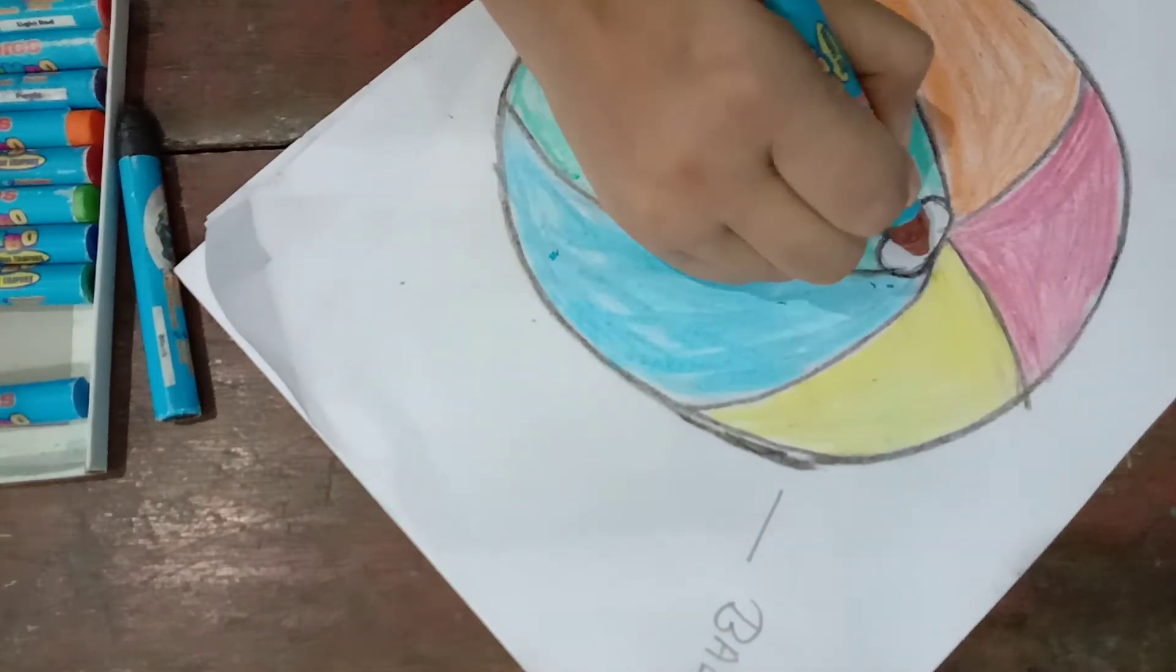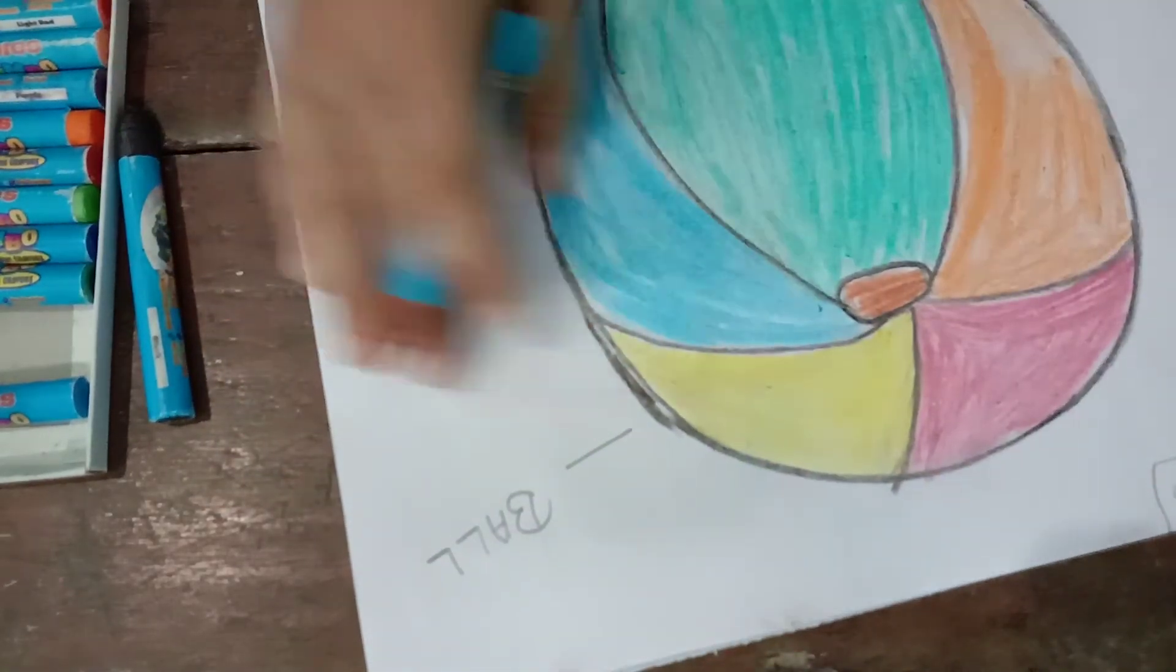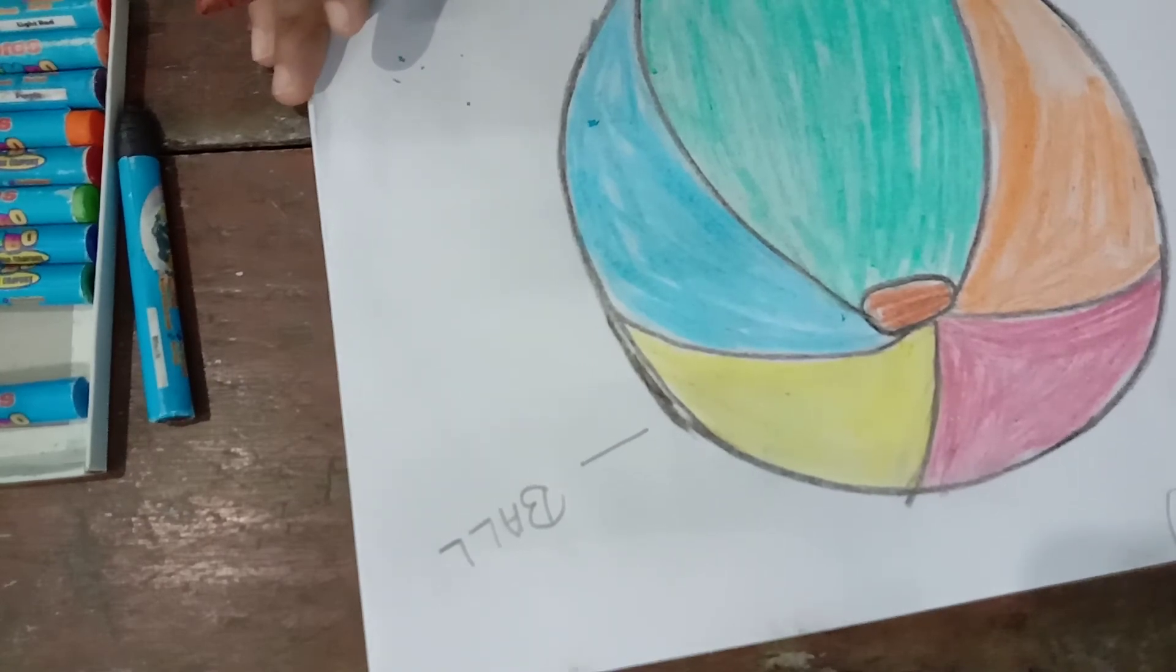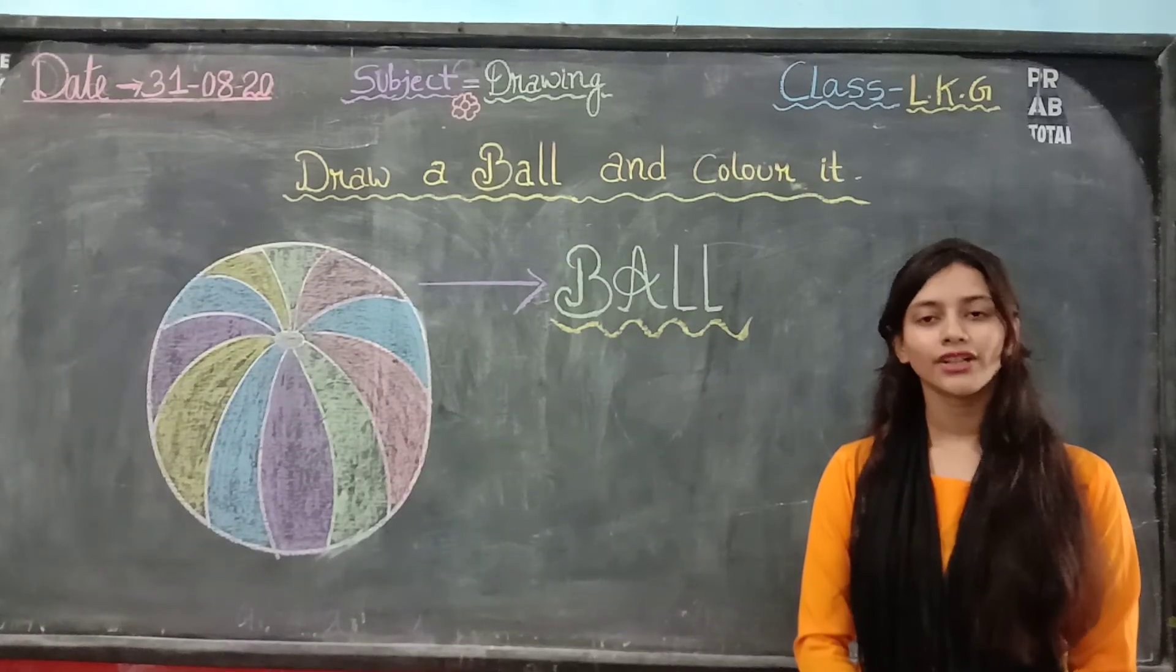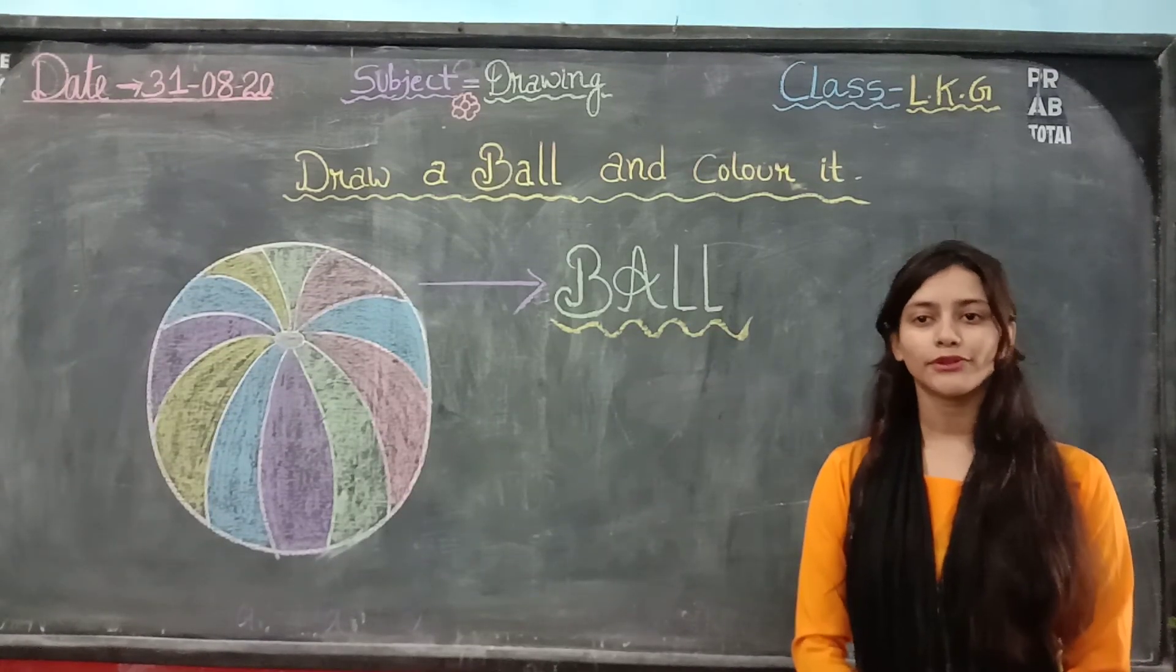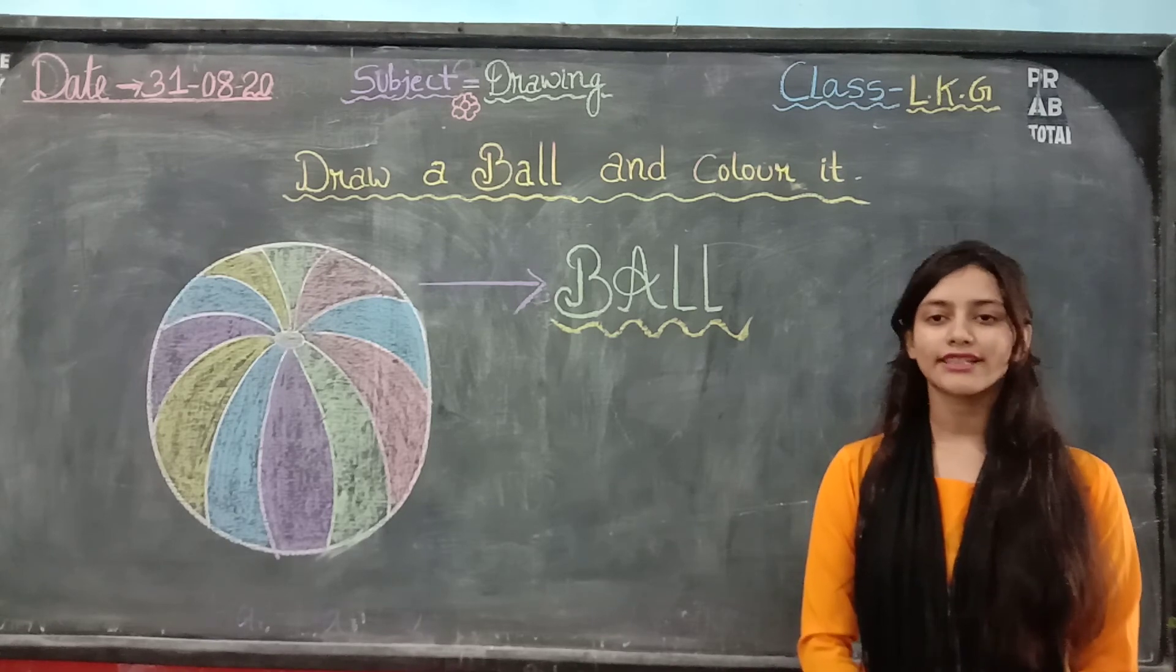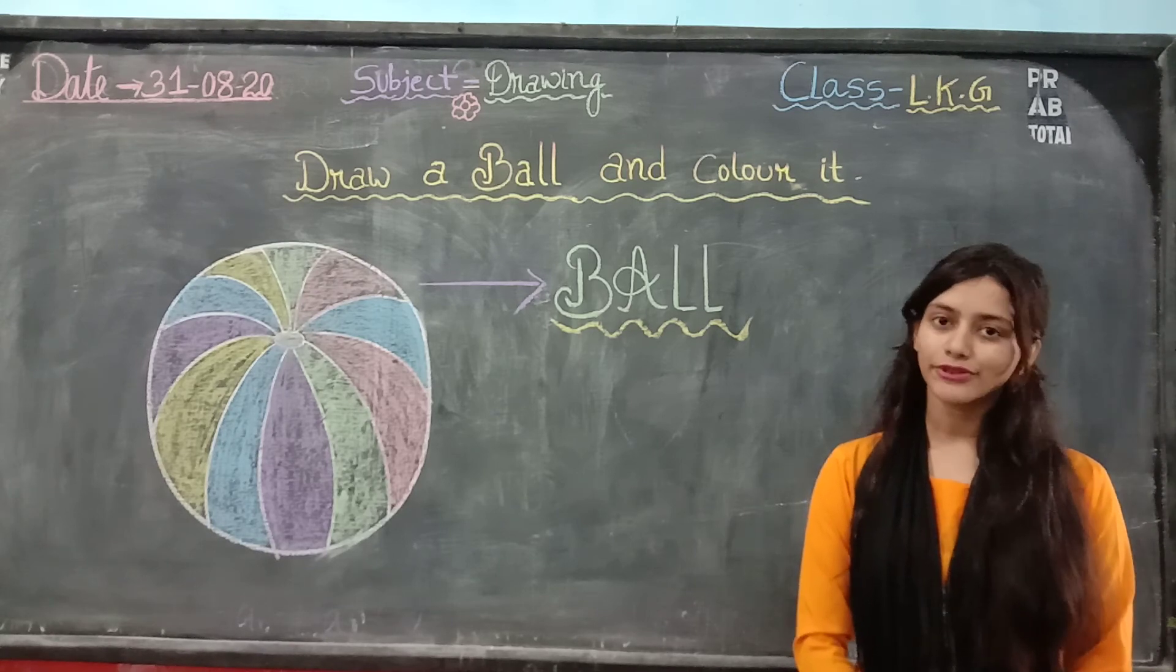Now I'm taking brown color. And now my ball is ready. Hope all of you can draw a ball now. This will be your homework. Draw a ball and color it. For today only this much. In the next drawing class I will meet with a new drawing. Thank you.